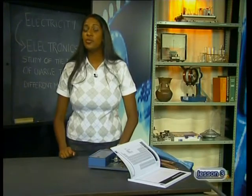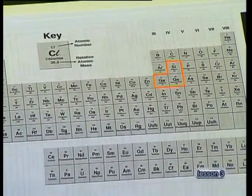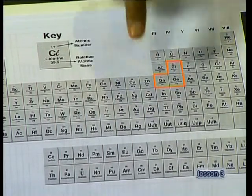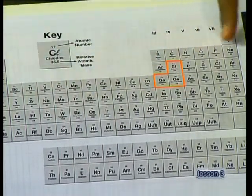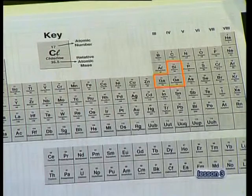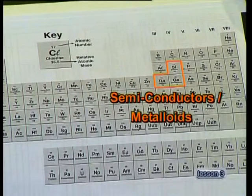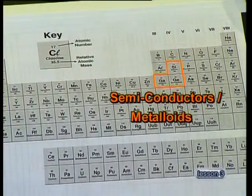Now in today's lesson, we will examine what effect applying a potential difference has on materials made from a group of elements found on the periodic table between the metals and the nonmetals. Of course, we're talking about the semiconductors, or metalloids.